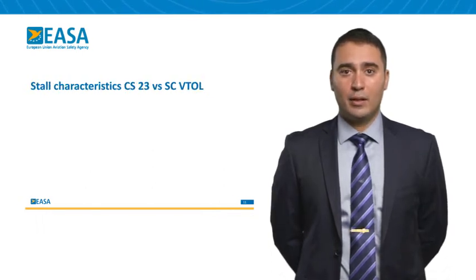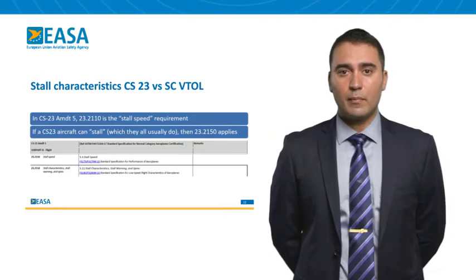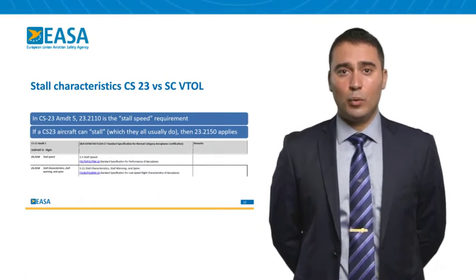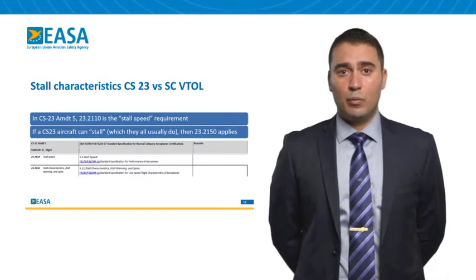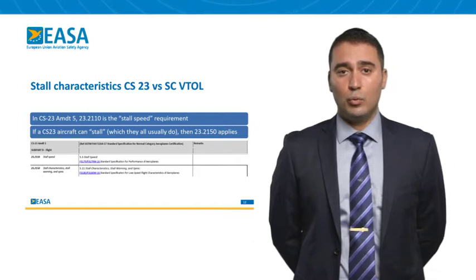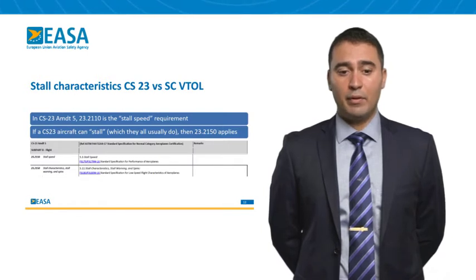Now let's go through the stall characteristics and the difference between CS23 and the special condition VTOL. In CS23 amendment 5, 23.2110 is the stall speed requirement. If an aircraft can stall — which is usually the case — you would also need to look at 23.2150, which covers stall characteristics, stall warning, and spins. In this slide, the left column shows the CS23 amendment 5 requirements, listing 2110 and 2150, while the middle column shows the ASTM material you need to refer to in order to show compliance.